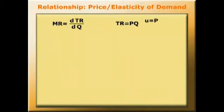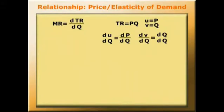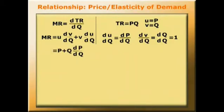If U is equal to P and V equals Q, then dU by dQ equals dP by dQ, and dV by dQ equals dQ by dQ which equals 1. By the product rule, marginal revenue MR equals U times dV by dQ plus V times dU by dQ, which equals P plus Q times dP by dQ.